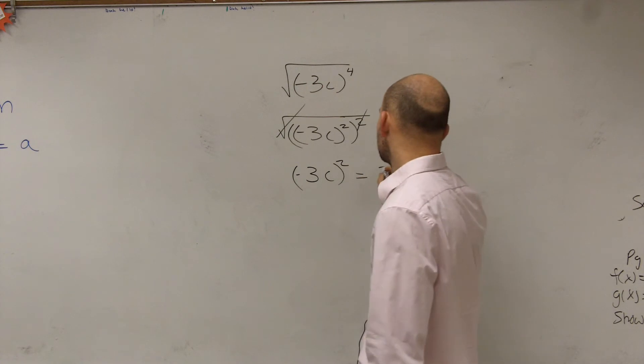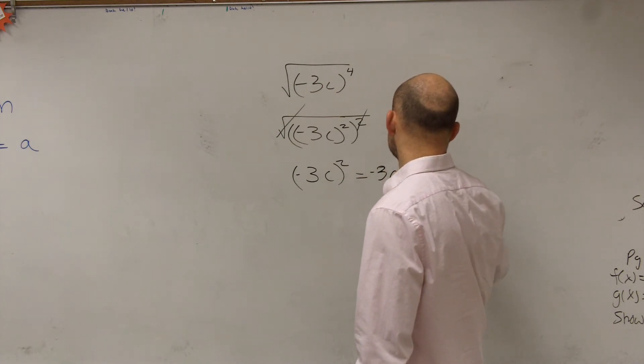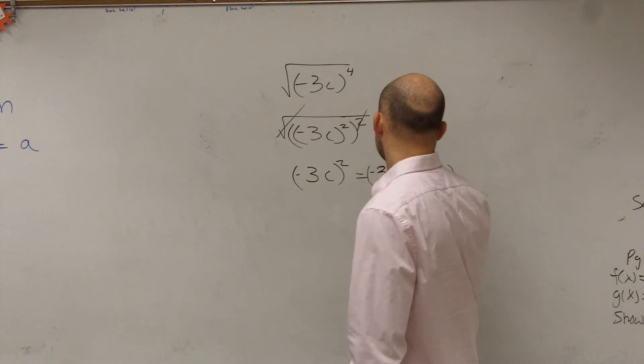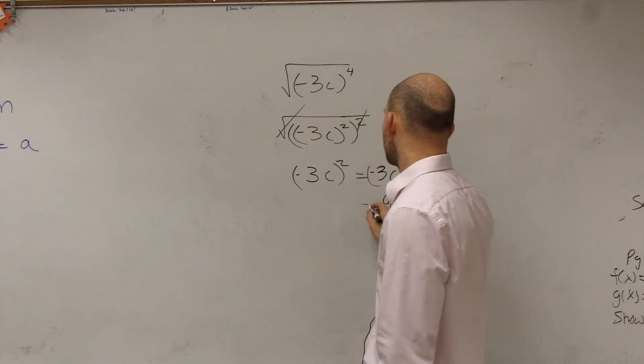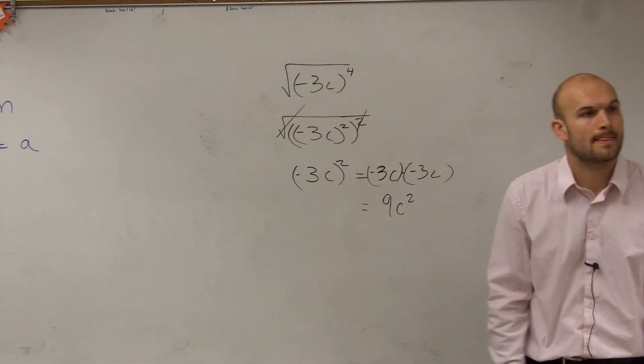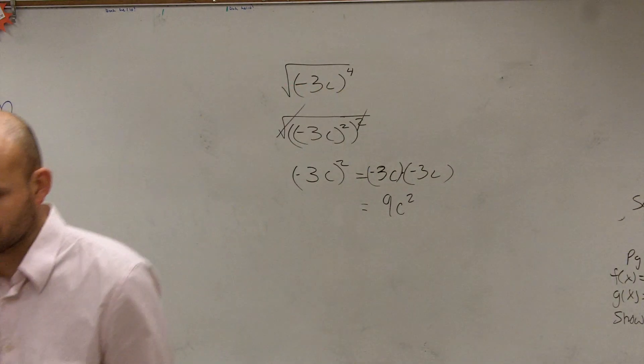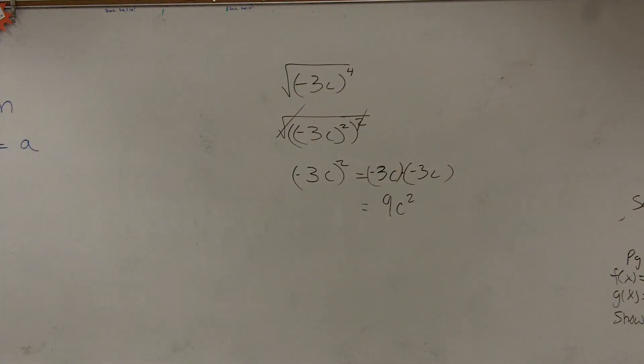Which is equal to negative 3c times negative 3c, which is equal to 9c squared. It's going to be positive 9.